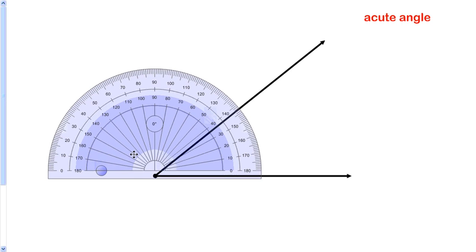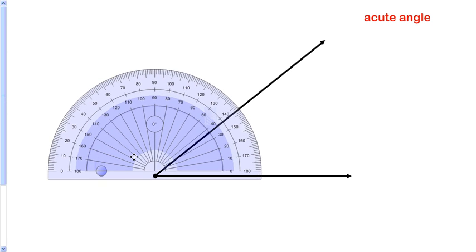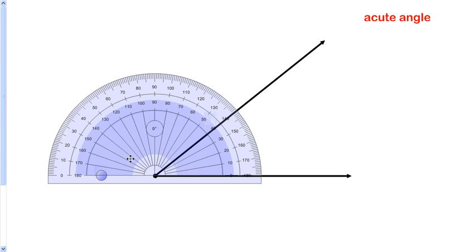Put the vertex at the center point of the protractor. Then think to yourself, is this an acute angle or an obtuse angle? Well this is acute, you can see it's smaller than 90 degrees, it's less than 90 degrees, so let's read up from zero.